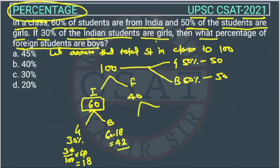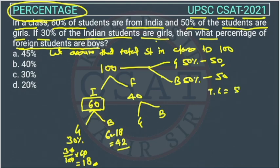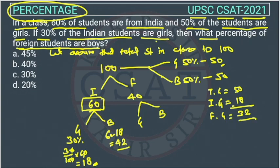Out of these 40 foreign students, there will be girls and boys. Total girls are 50, Indian girls are 18, so foreign girls will be 50 minus 18, which equals 32. So foreign girls are 32.